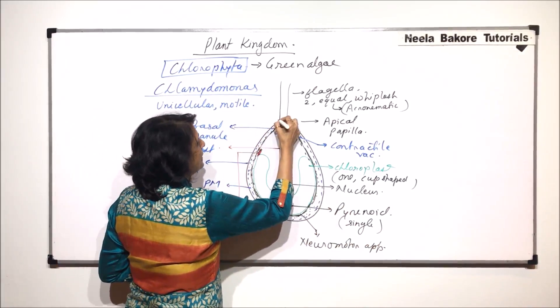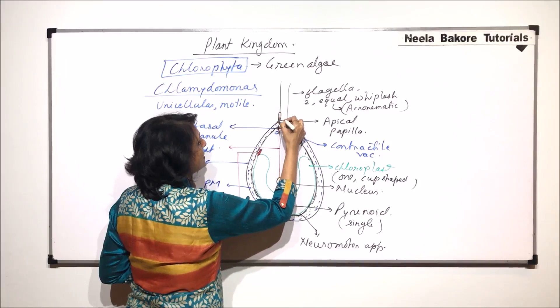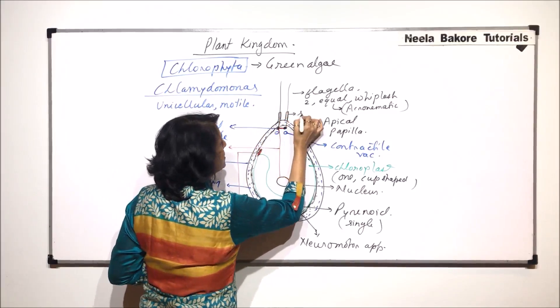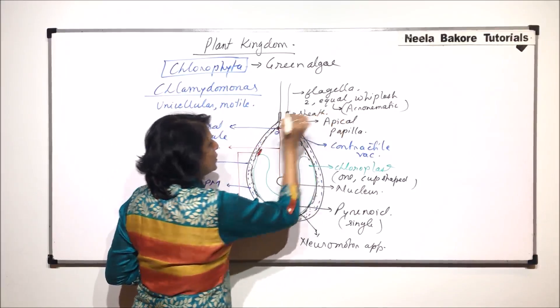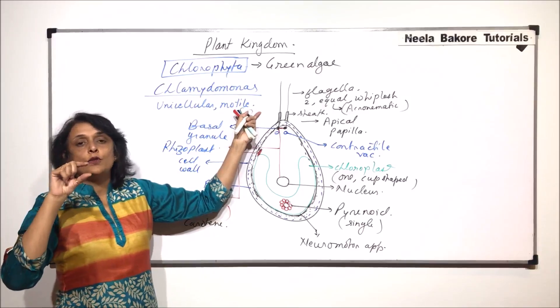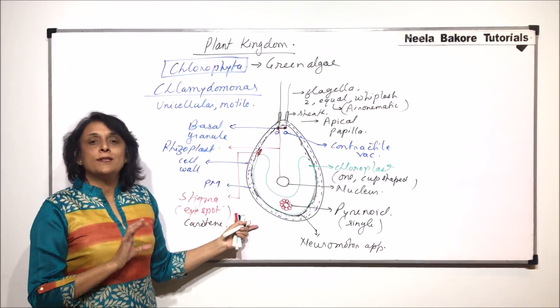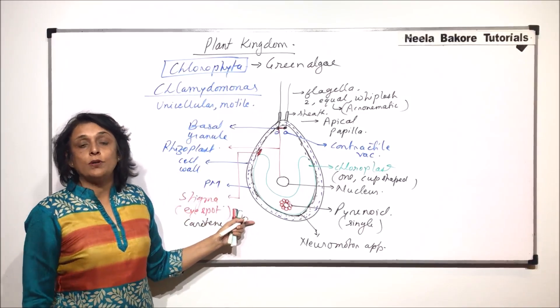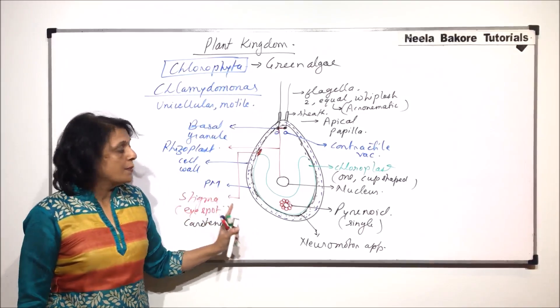If we look at these flagella we find that the base has extension of plasma membrane which forms the sheath. This sheath is present only in the lower part of those flagella. So very simple structure, typical eukaryotic but there are few very important features which we have to remember.